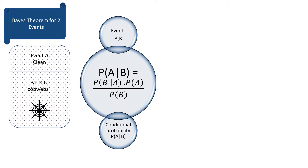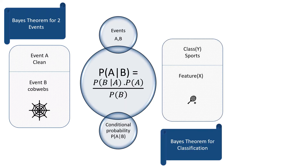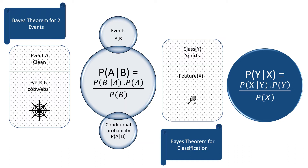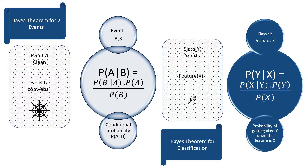The Bayes theorem is for any two given events, but we have a problem of classification. How do we convert this two-event problem into a classification problem? The event we are trying to figure out is the class, and the event it depends on is the feature. What is the probability of the class occurring given the feature? Here Y is the class and X is the feature, and probability of Y given X equals probability of X given Y times probability of Y divided by probability of X — the same structure as the Bayes theorem.